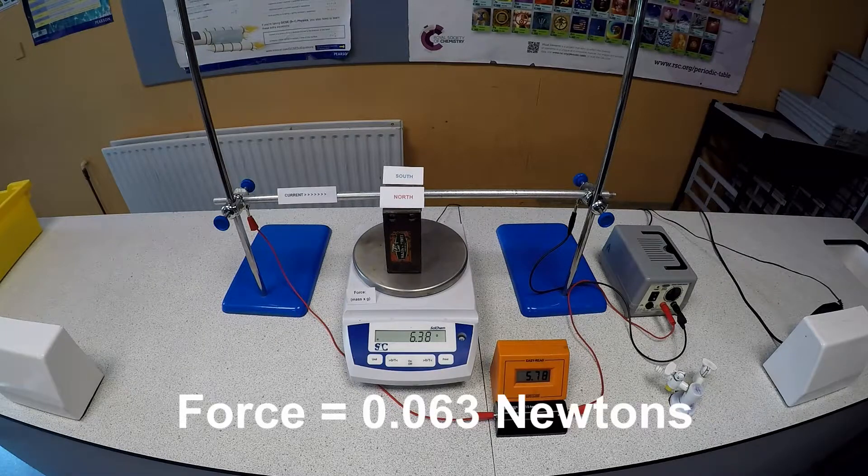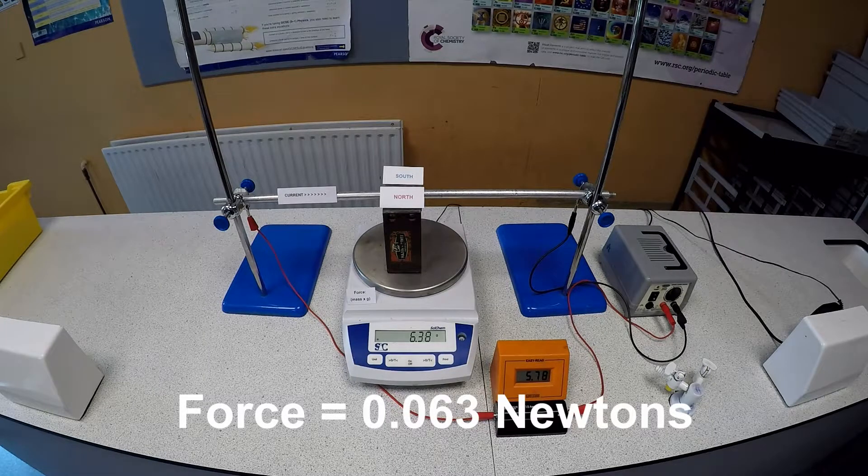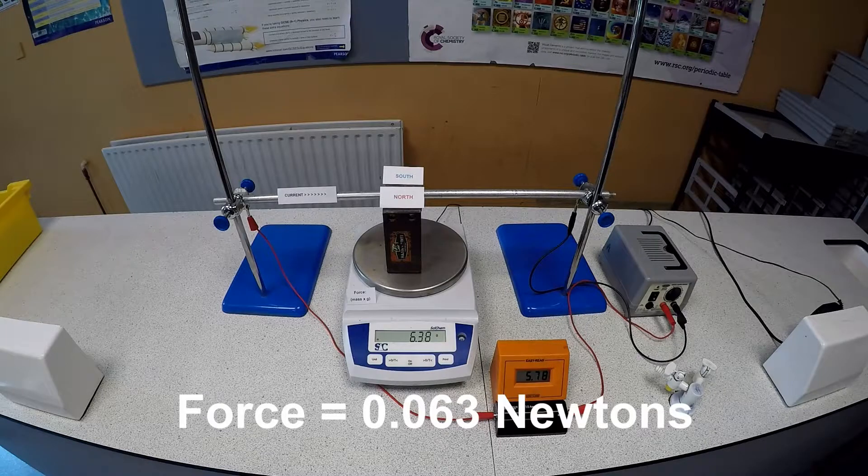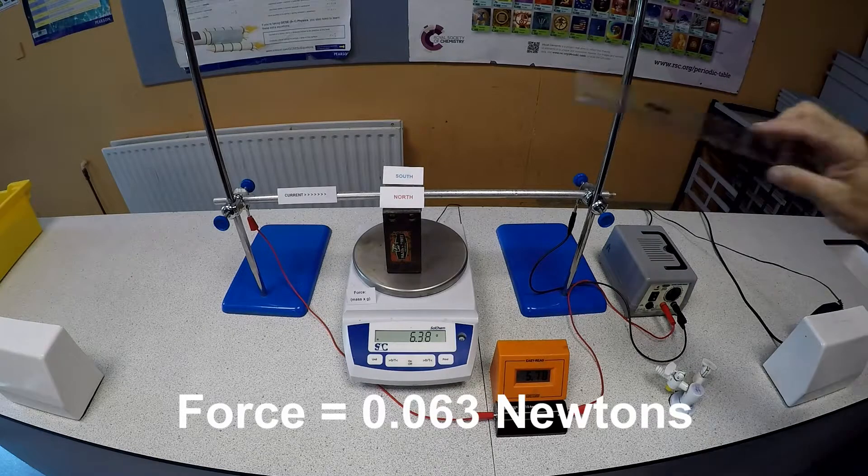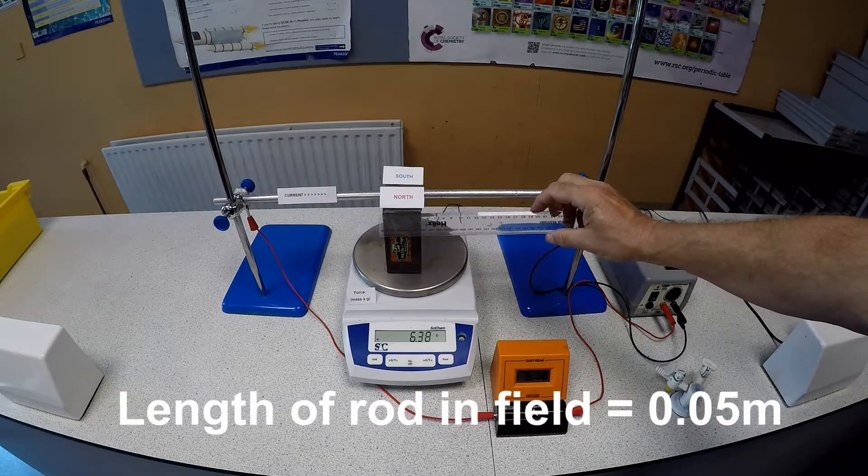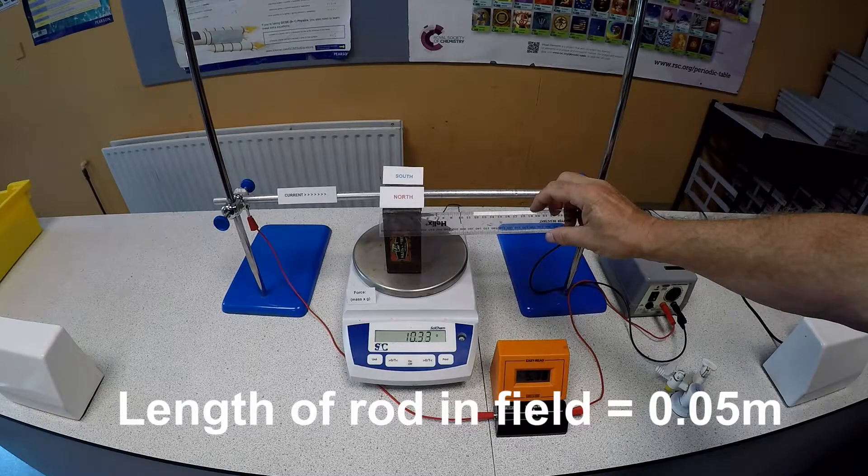Reading the mass off the balance and multiplying by g, you can find the force being applied. Now you need to read the length of the rod actually in the magnetic field.